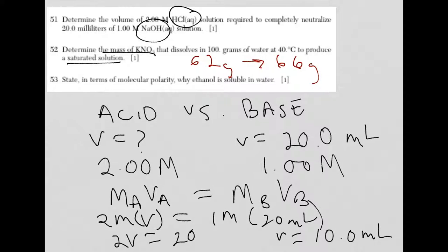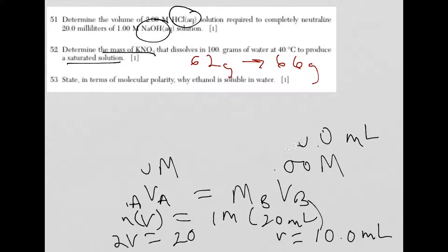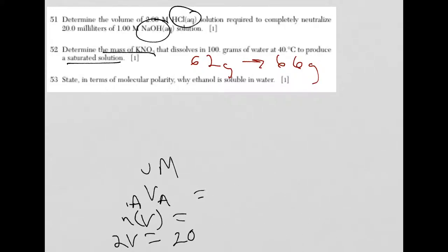Finally, for 53, let me erase this so we have some room. It says state in terms of molecular polarity why ethanol is soluble in water. Now, you might not remember ethanol, but hopefully you know that water has polar bonds inside of the molecule, water is a polar molecule.